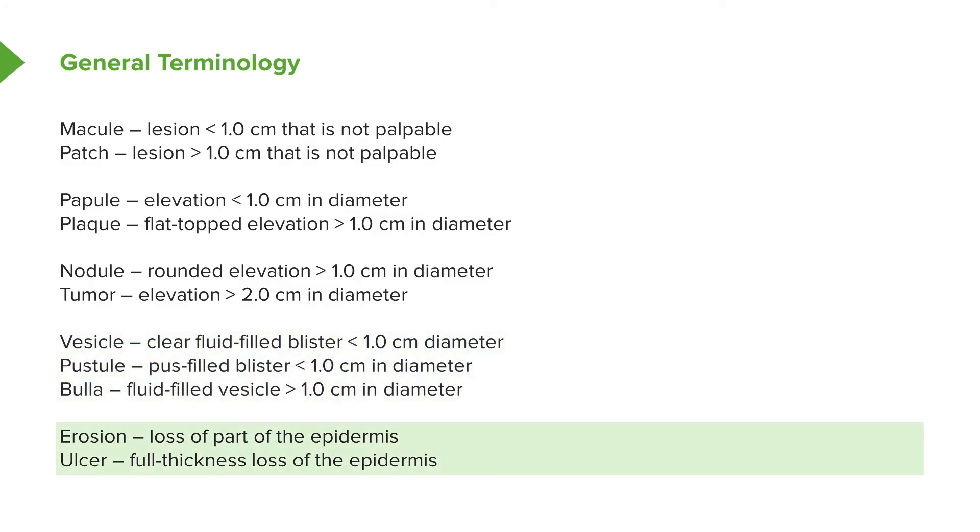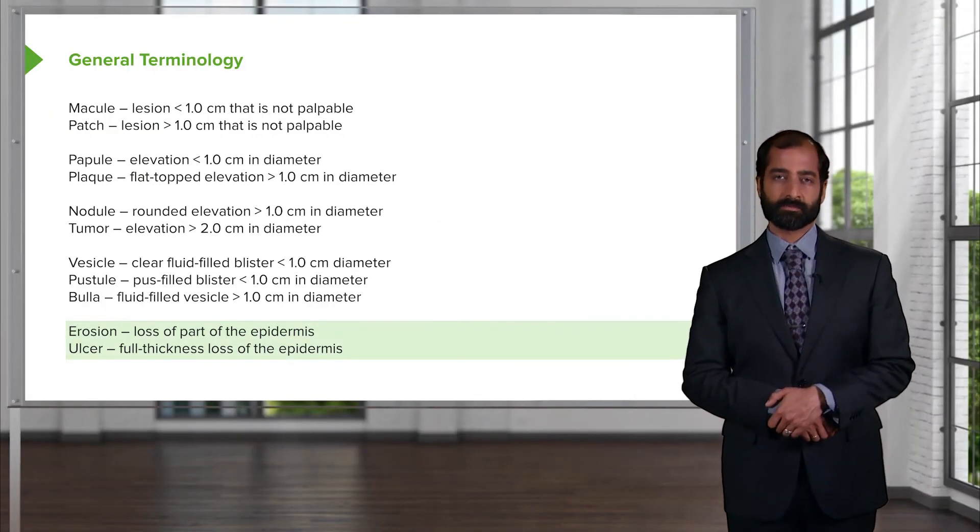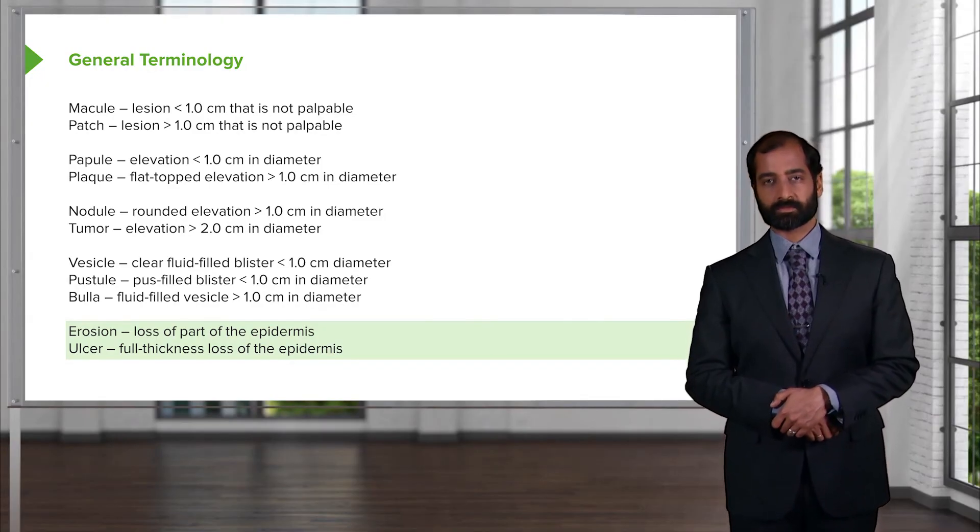And you have erosions. Well, with an erosion, it's loss of part of the epidermis. Part. Erosion. Whereas if it's an ulcer that you're going to then notice on the skin, then please understand that's the full thickness loss of the epidermis. The fine difference between erosion and ulcer becomes important to you in terms of description.